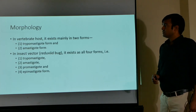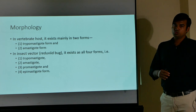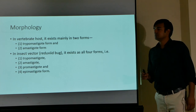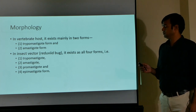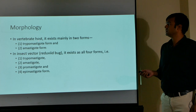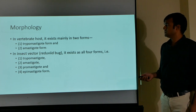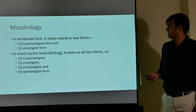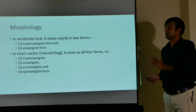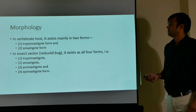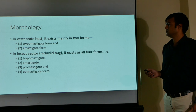Regarding morphology, Trypanosoma cruzi exists in two hosts: a vertebrate host and a vector. In the vertebrate host it exists mainly in two forms — trypomastigote and amastigote. In the insect vector, the reduviid bug, it exists in all four forms: trypomastigote, amastigote, promastigote, and epimastigote.